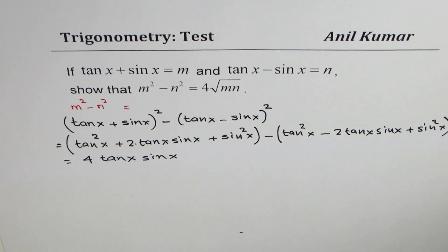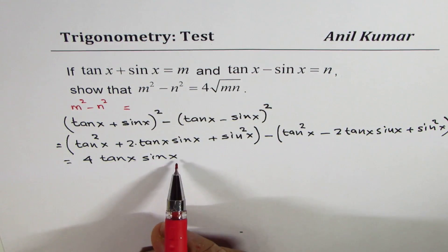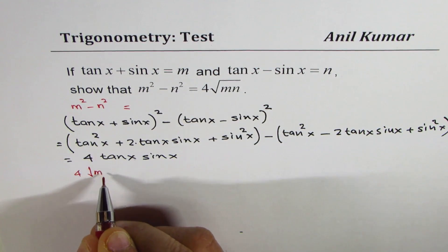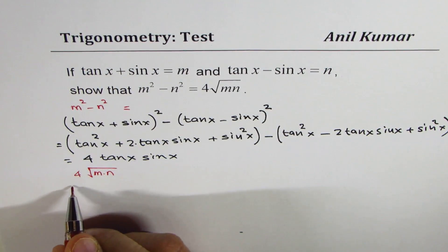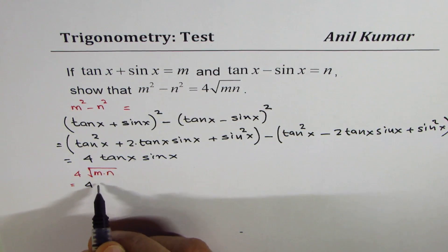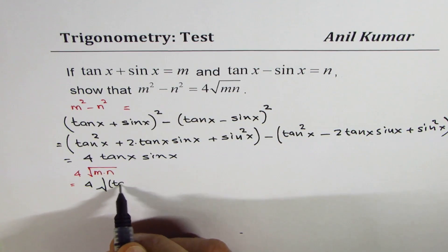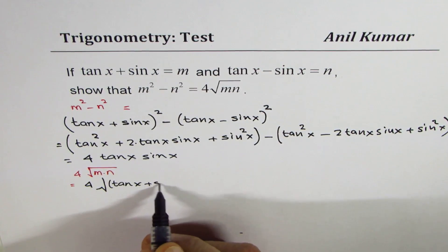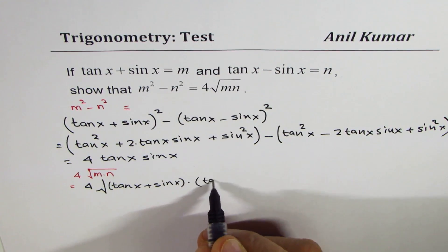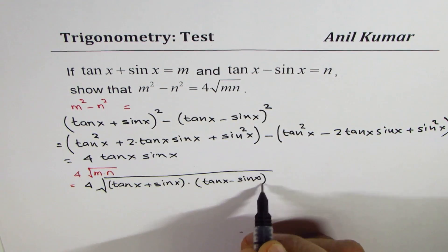Now let us figure out what 4 times the square root of mn is — is it also 4 tan x sin x? Let's calculate 4 times the square root of m times n. So we have 4 times the square root of (tan x plus sin x) times (tan x minus sin x).